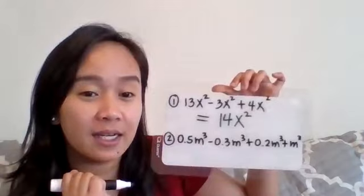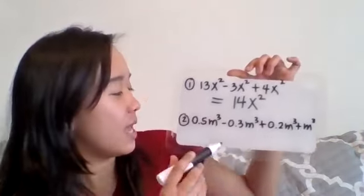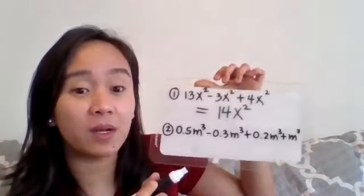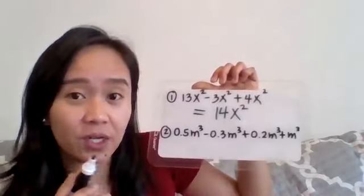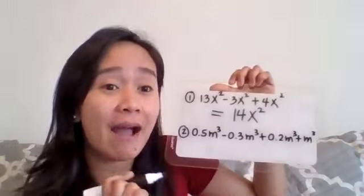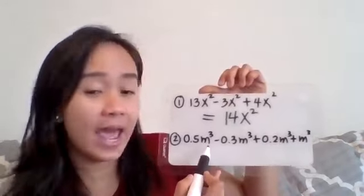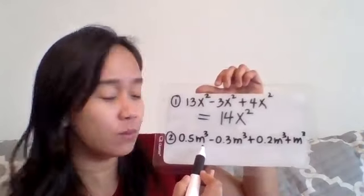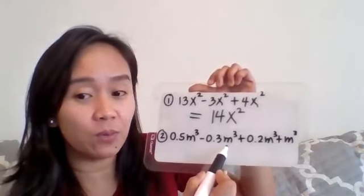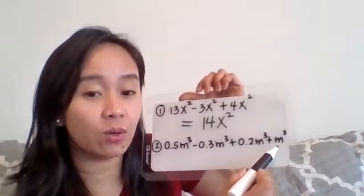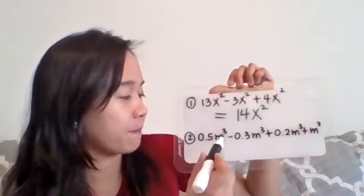Now let's have the next one. Same goes with decimals, so let's check first if they are like terms. Do they have the same variables or exponents? Let's check: that's m³, that's m³, that's m³, and that's m³ or raised to the power of 3. Since they have the same term, that means you can combine everything.